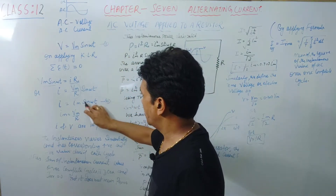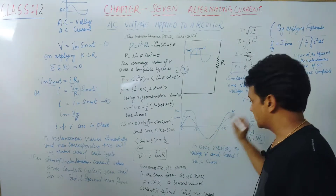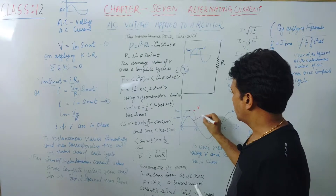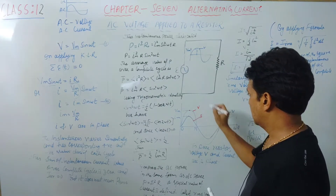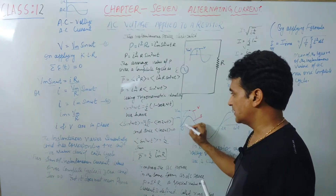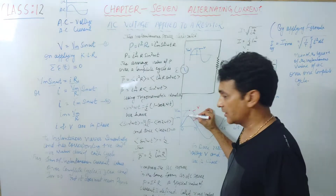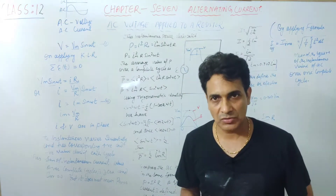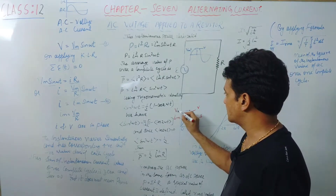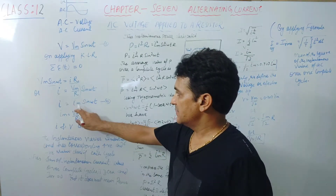So as much voltage we get, that much current we get — meaning there is no phase drop. Looking at the graph, the voltage goes in one form and the current also goes in the same form — just slightly lower because every element has resistance. Am indicating maximum value of the current and Vm indicating maximum value of the voltage. So Im = Vm/R, from Ohm's law.